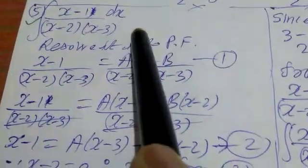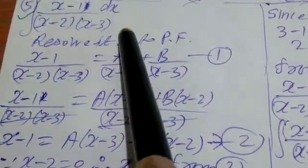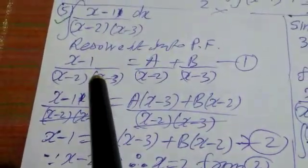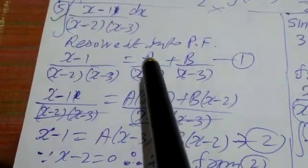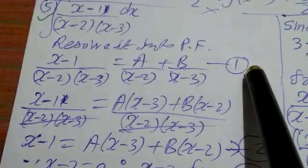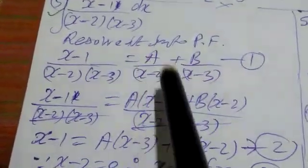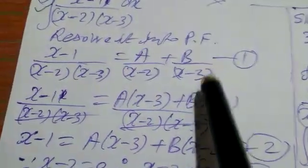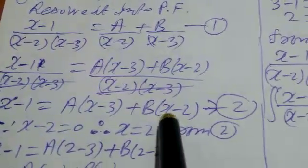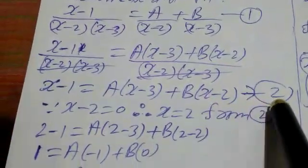One more problem: integration of (x minus 1) dx divided by (x minus 2)(x minus 3). First step: resolve into partial fractions. (x minus 1) upon (x minus 2)(x minus 3) equals A upon (x minus 2) plus B upon (x minus 3) — equation 1. Cross-multiplying and cancelling denominators gives x minus 1 equals A into (x minus 3) plus B into (x minus 2) — equation 2.